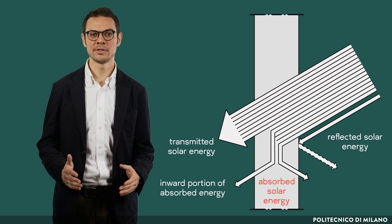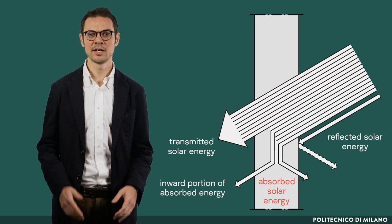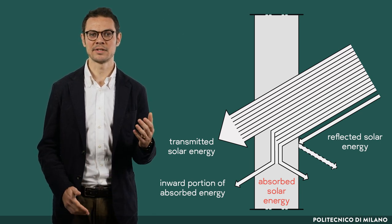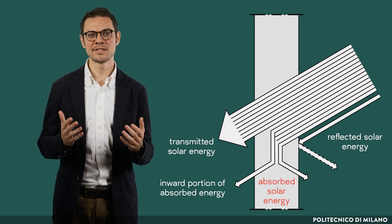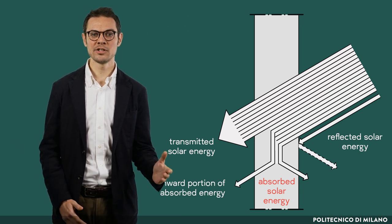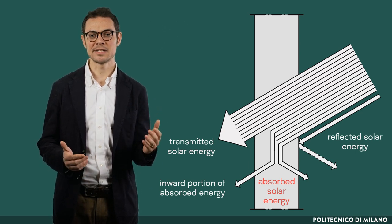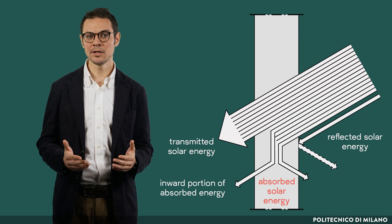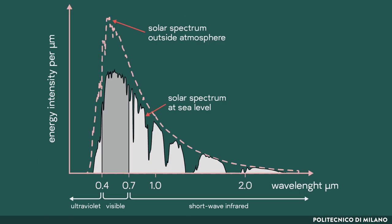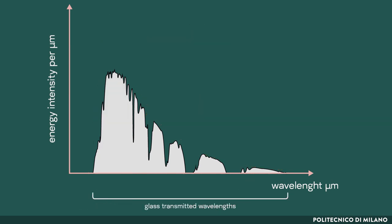Of such overall amount incident on a glass surface, part is reflected, part is absorbed, and part is transmitted. Of the absorbed energy, a part returns to the outside and a part is released inside, due to the heating of the glass. However, the fraction of solar energy transmitted does not correspond to the fraction of light transmitted. This is due to the fact that glass transmits all wavelengths of the solar spectrum, not only the ones contained in the visible spectrum.